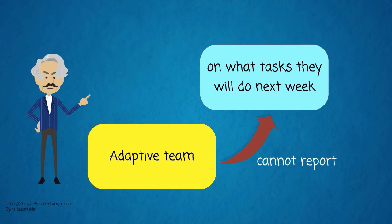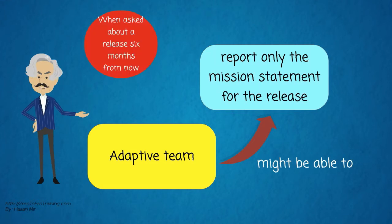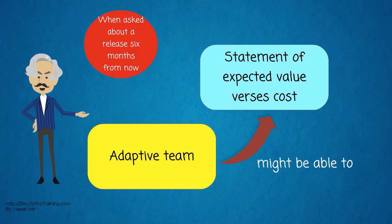An adaptive team cannot report exactly on what tasks they will do next week. But they can tell which features they are planning for next month. When asked about a release six months from now, an adaptive team might be able to report only the mission statement for the release, or a statement of expected value versus cost.